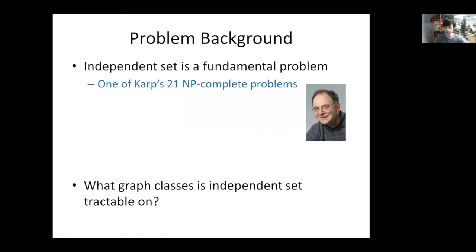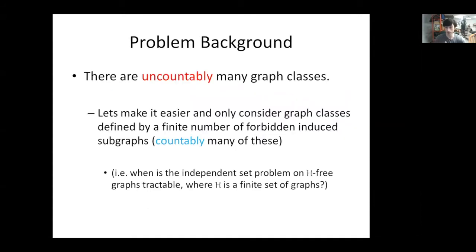Independent set is a fundamental problem — it was one of Karp's 21 NP-complete problems. Given that the general problem is hard, we want to know: for what graph classes is independent set tractable? In general, there are uncountably many graph classes, so let's restrict to graph classes defined by a finite number of forbidden induced subgraphs. The question I'm asking is: when is the independent set problem on H-free graphs tractable, where fancy H is a finite set of graphs?